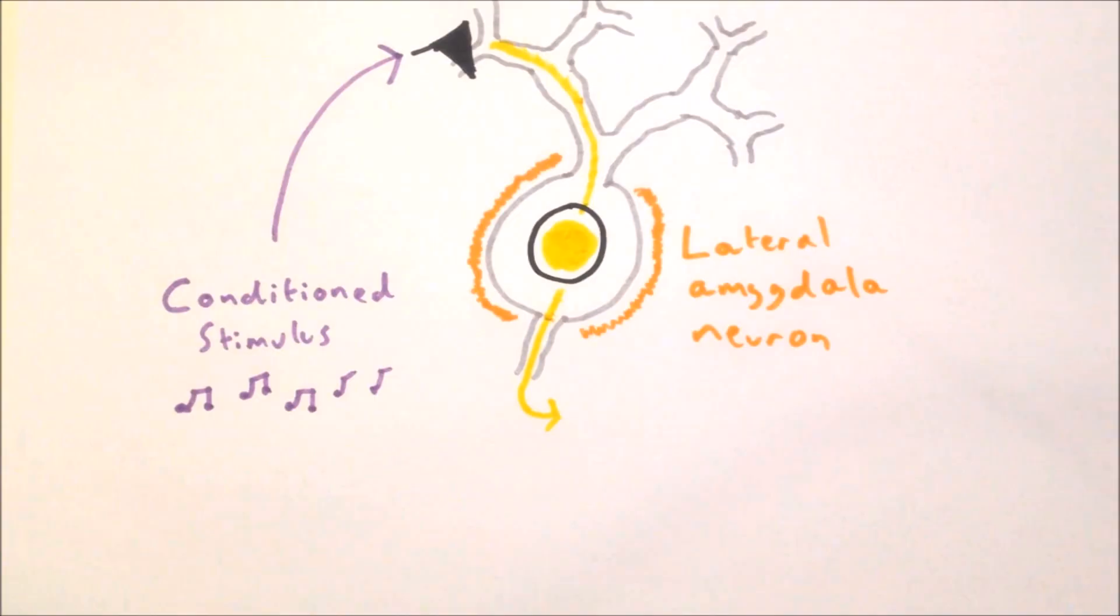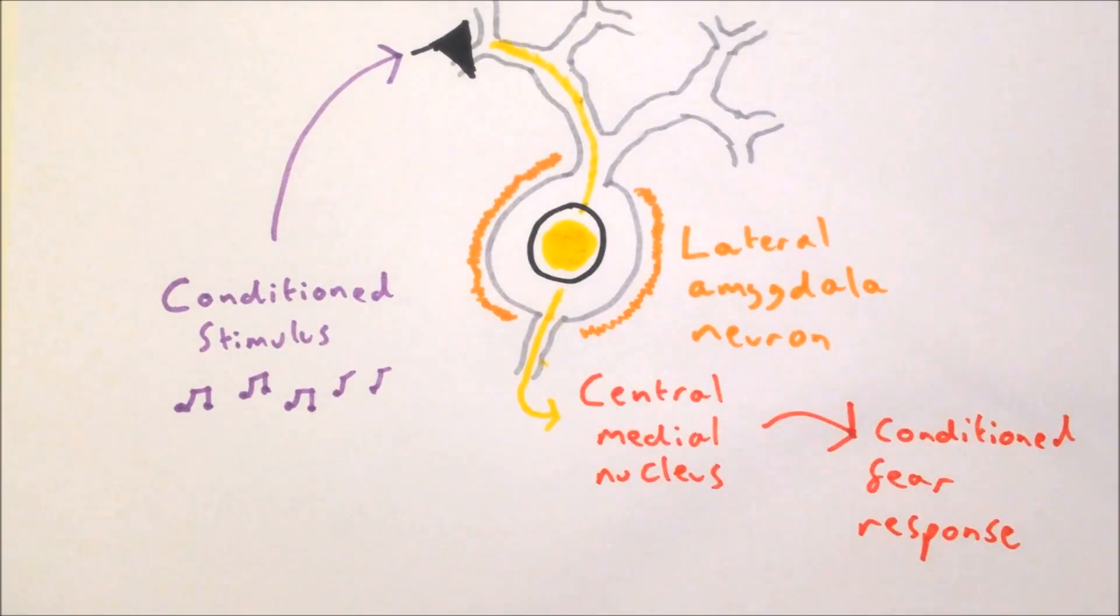The lateral nucleus of the amygdala then excites the central medial nucleus and produces feelings of fear. The neutral stimulus then becomes a conditioned stimulus and is able to produce the conditioned response of fear without the foot shock.